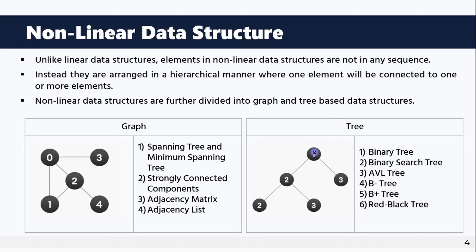Tree-based data structures connect nodes in a hierarchical manner with a root node. For example, node 1 is the root, connected to node 2 and node 3. Popular tree-based data structures include binary tree, binary search tree, AVL tree, B-tree, and Red-Black tree.